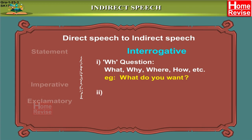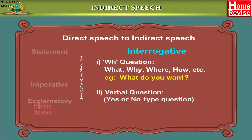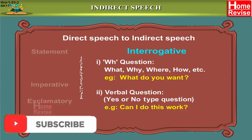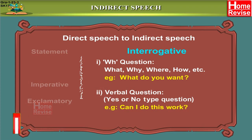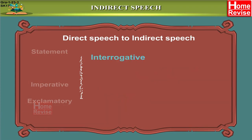The second kind of question is a verbal question, also called a yes or no type of question. It usually begins with an auxiliary or modal auxiliary verb. For example, 'Can I do this work?' The expected answer to such a question is always in the form of yes or no.